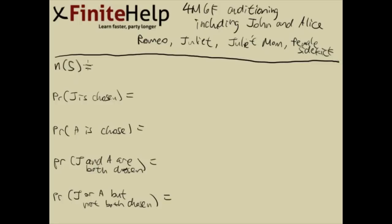First we want to find the number in the sample space. This is a permutation because all the roles are distinct. That's what makes it a permutation — order matters because roles are distinct.